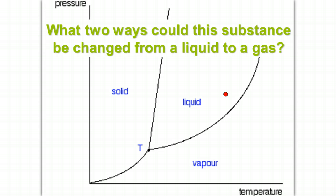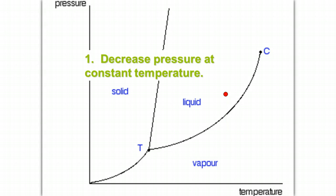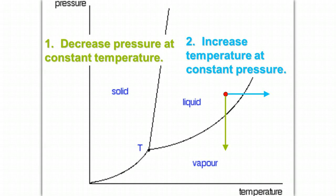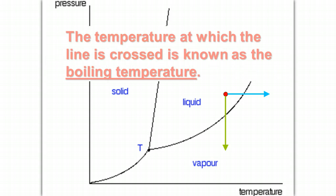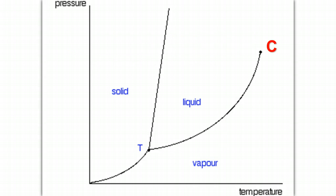What two ways could this substance be changed from a liquid to a gas? And so one way we could change is by decreasing the pressure, keeping the temperature constant. The second way would be to increase the temperature while keeping the pressure constant. And so these are the two ways we could change from the liquid state to the gas state for this substance. The temperature at which the line is crossed is known as the boiling temperature. The boiling temperature can vary depending on what the pressure is.